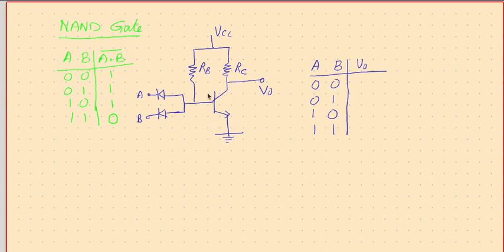We ensure this through the inverter action — that is, the NOT gate action. We had seen this circuit as a NOT operation: when the input is high, output is low; when the input is low, output is high. Somehow if we can make this point low, then this point gets high. To make it high here, we need a low here. To make this low, the simplest way is to pull down this voltage so that the transistor gets into cutoff. We use diodes — two diodes are used in this case.